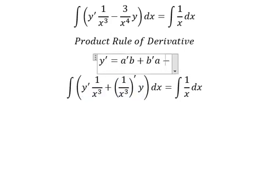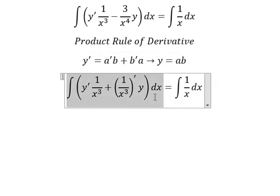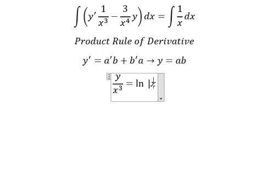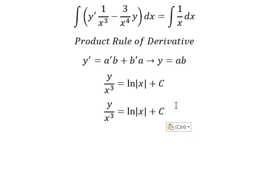So the integration of this one, we have y equals to ab. So the integration of that one, we have y over x to the power of 3. This one, we have ln of the absolute value of x, and I will put c. Now we multiply both sides by x to the power of 3.